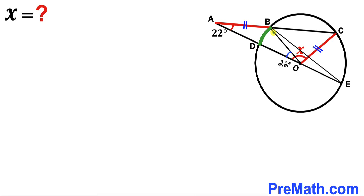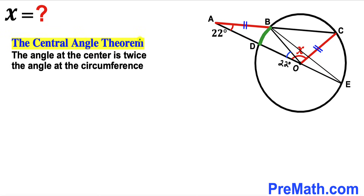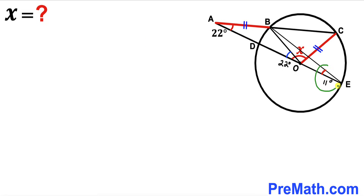Now let's make an observation. We have arc BD, which subtends two angles: angle BOD at the center and angle BED at the circumference. Recalling the central angle theorem, the angle at the center is twice the angle at the circumference. We know the angle at the center is 22 degrees, so the angle at the circumference, angle BED, is half of 22 degrees, which is 11 degrees.